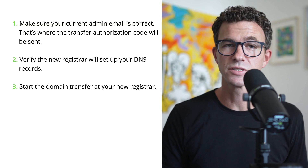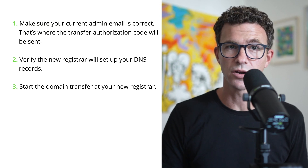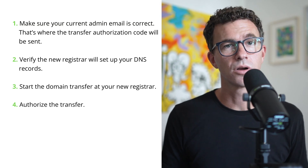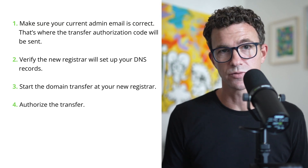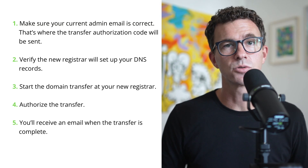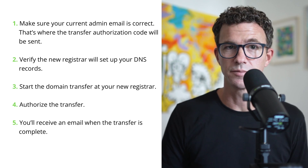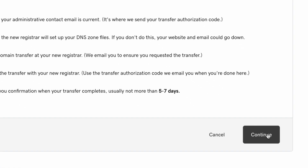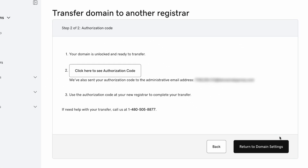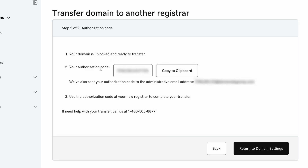Three, start the domain transfer with your new registrar. Four, authorize the transfer. Five, you'll receive an email when the transfer is complete. Click continue. Here you'll see your domain is unlocked and ready to transfer. Click here to see the authorization code and copy it to your clipboard.